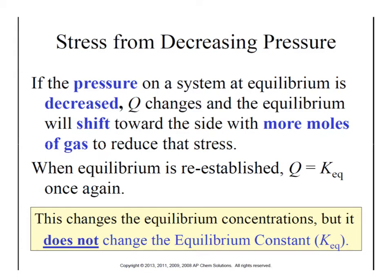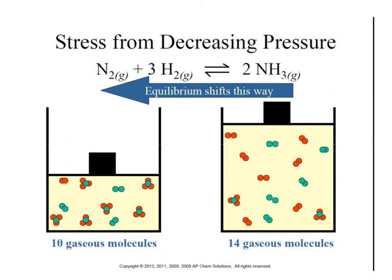The same thing applies in reverse. If we decrease the pressure on the system, the system is going to shift to relieve that stress by filling in the void and increasing the pressure — shifting towards the side with more moles of gas. Once equilibrium is reestablished, Q goes back to KEQ. So increasing volume decreases pressure, and equilibrium shifts to the left, generating more moles of gas to fill that void. The pressure and KEQ of both resulting systems are going to be identical.